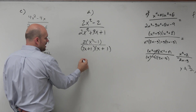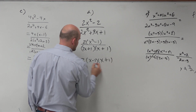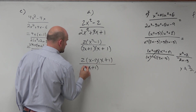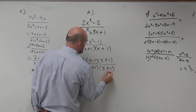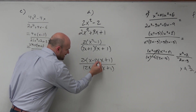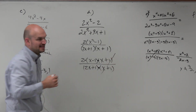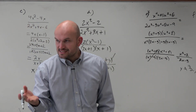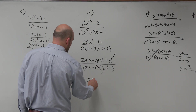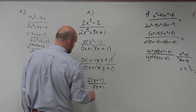Then we look at x squared minus 1 and say, that's a difference of two squares — we love those. Now all of our quantities are separated by multiplication, so we can apply the division property. That doesn't cancel out, but it goes to 1, and we're left with 2 times x minus 1, all over 2x plus 1.